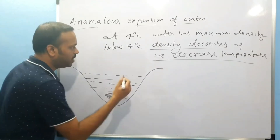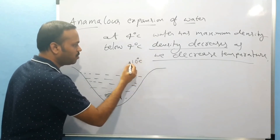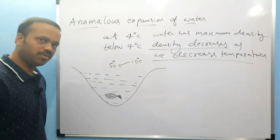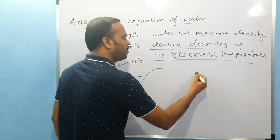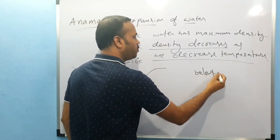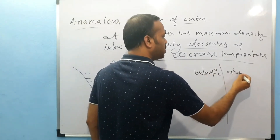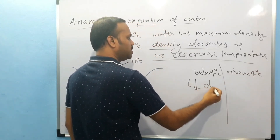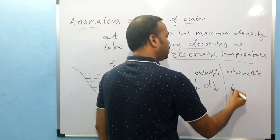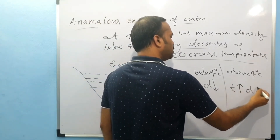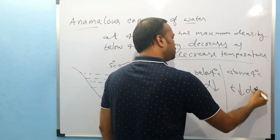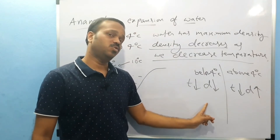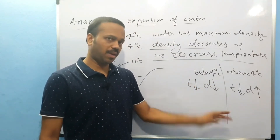Let us assume 10 degrees Celsius, then 5 degrees Celsius. Below 4 degrees Celsius: temperature decreases, density decreases. Above 4 degrees Celsius: temperature decreases, density increases. This is not a normal situation — it is anomalous, but it happens in water.